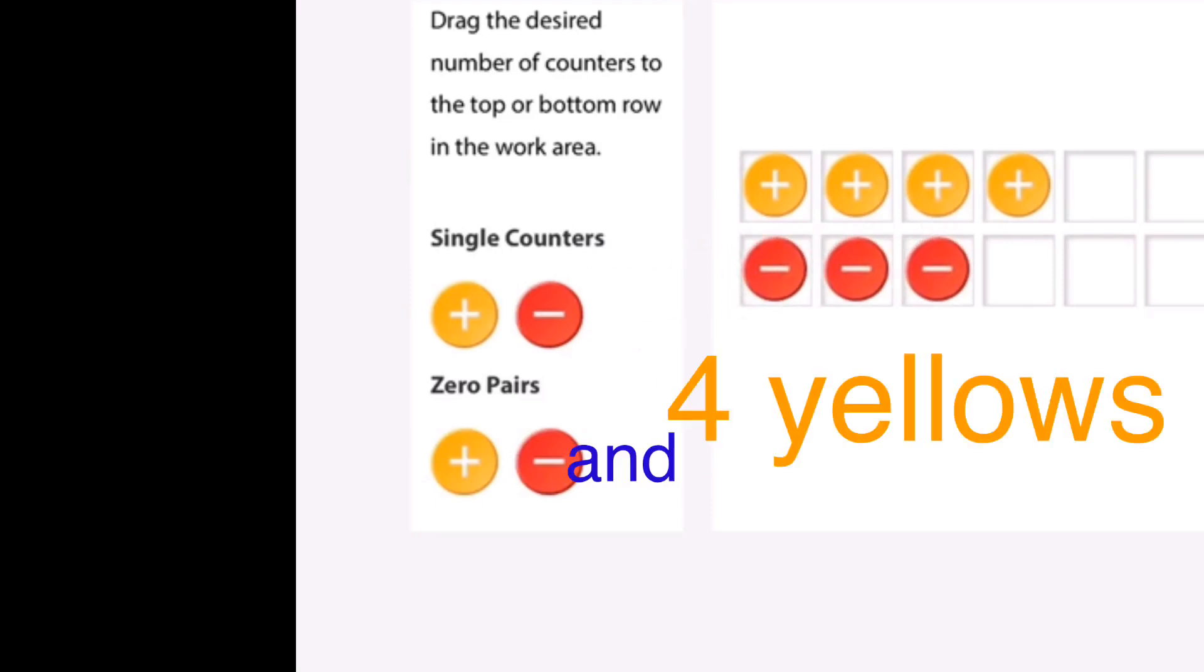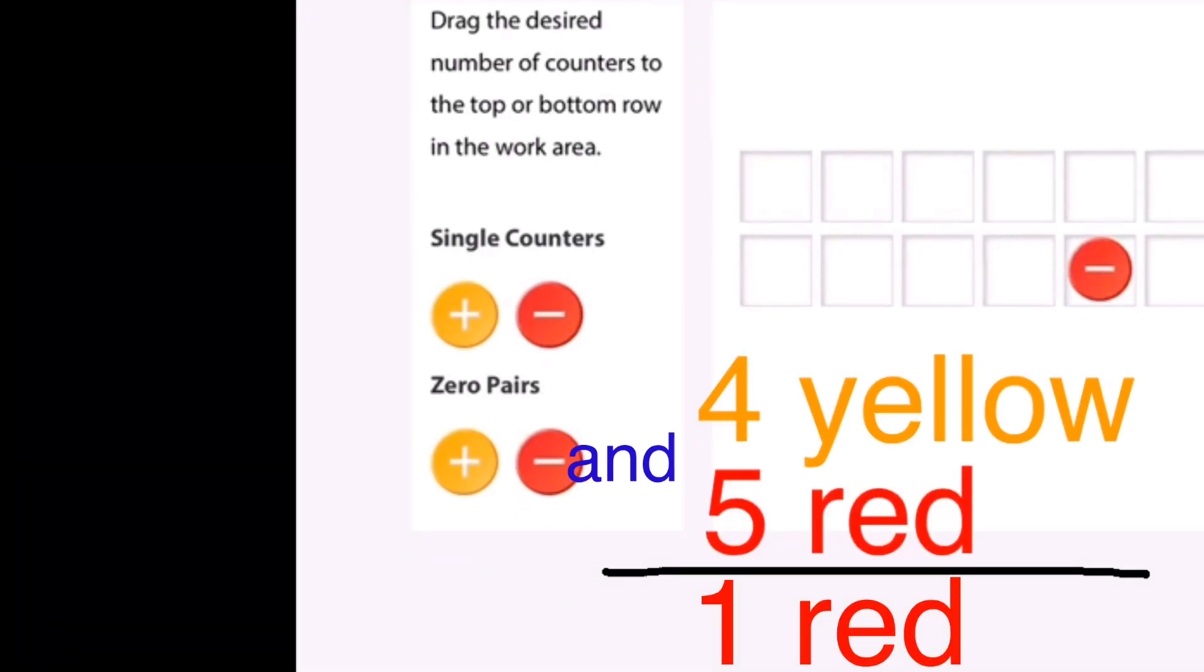Here I have four yellow and five red. After putting the zero pairs together I will have one red.